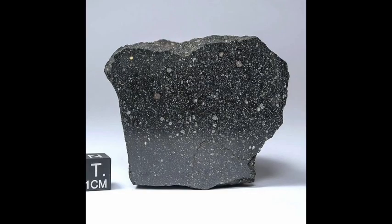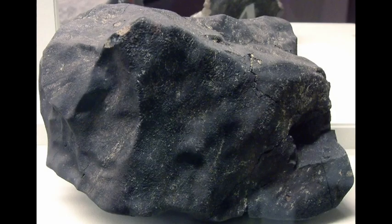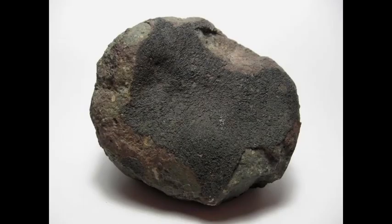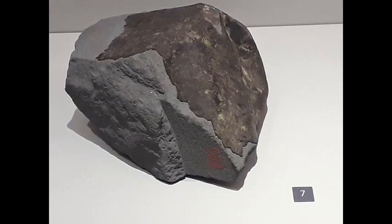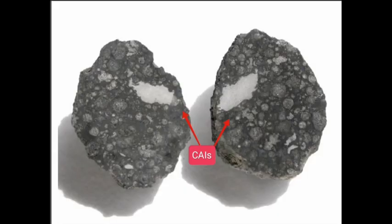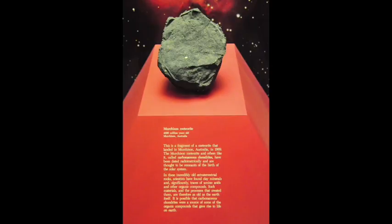Now that we've covered ordinary chondrites and their classification, let's dive into another fascinating group of meteorites: the carbonaceous chondrites. Carbonaceous chondrites are known for their complexity and heterogeneity. They have dark gray to black fusion crusts and often show minimal signs of thermal metamorphism. And unlike ordinary chondrites, they generally lack metal.